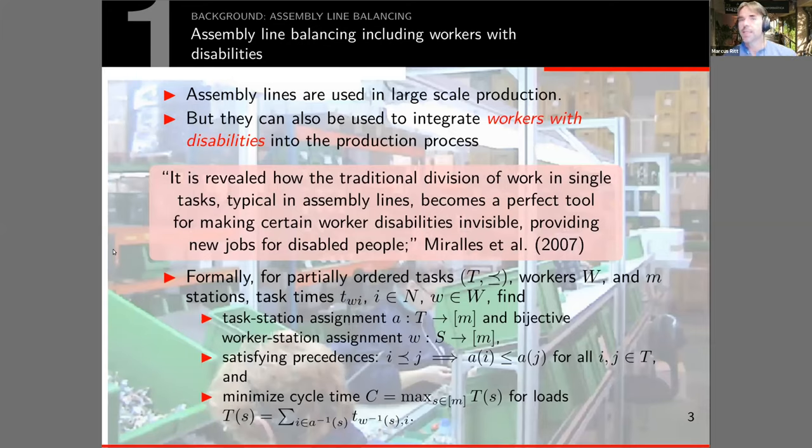Assembly lines are basically a production mode for large-scale production. We have a couple of stations and you pass the partial product from station to station until it's finished, and these stations are typically synchronized.